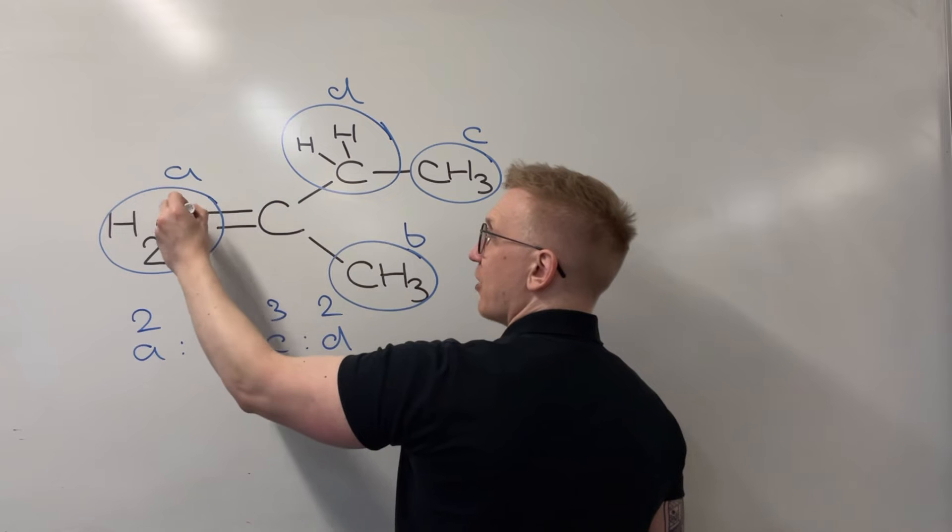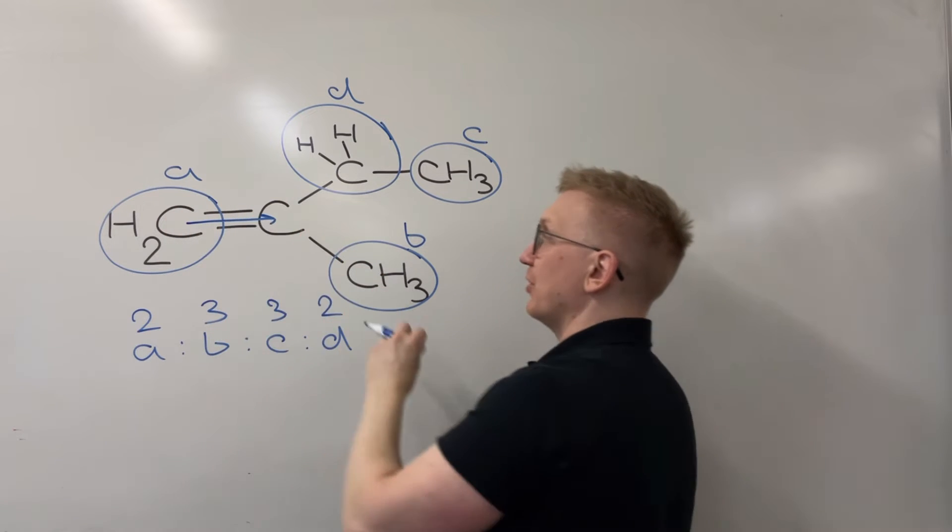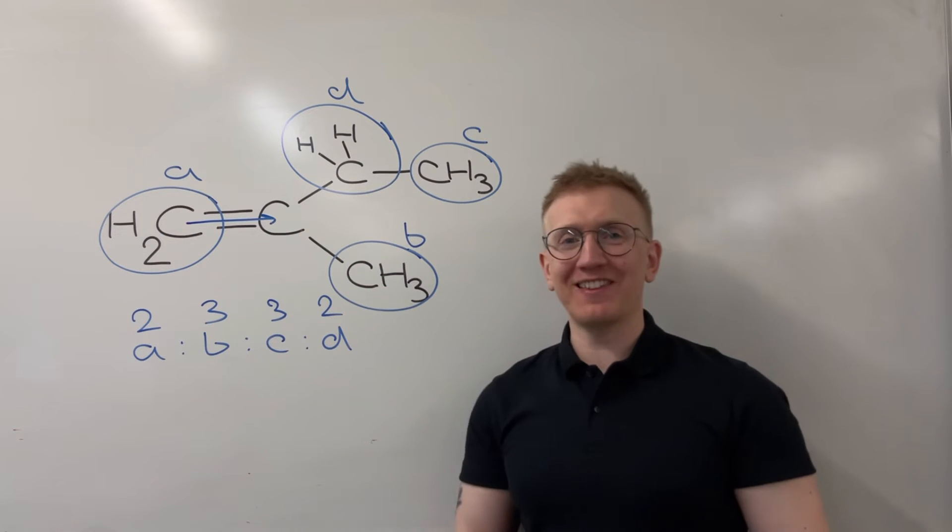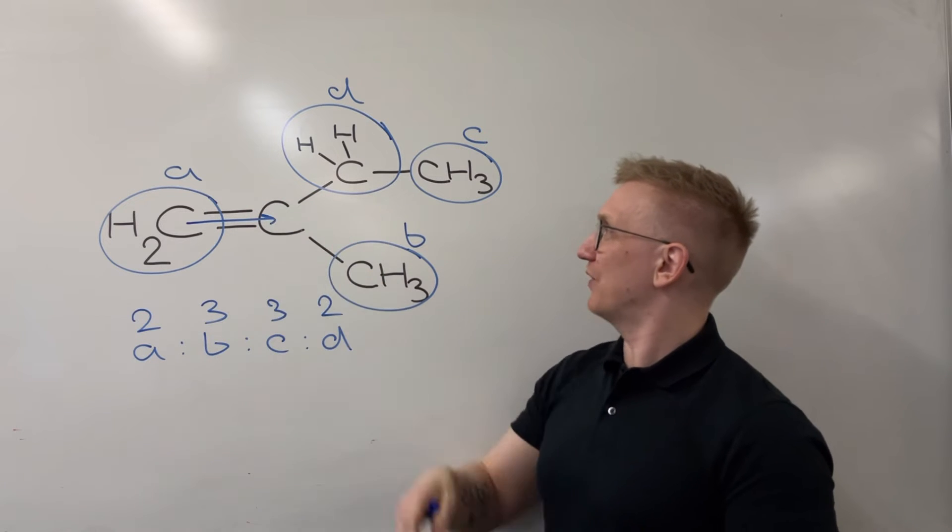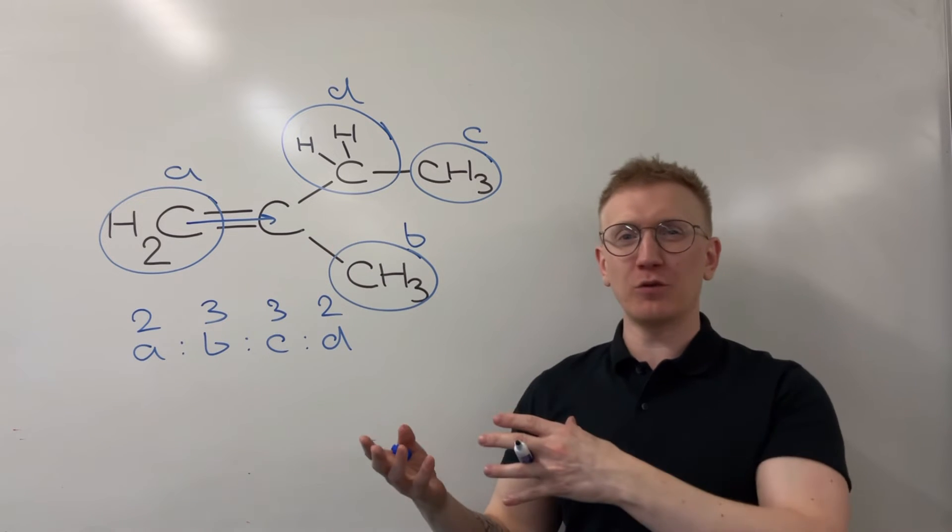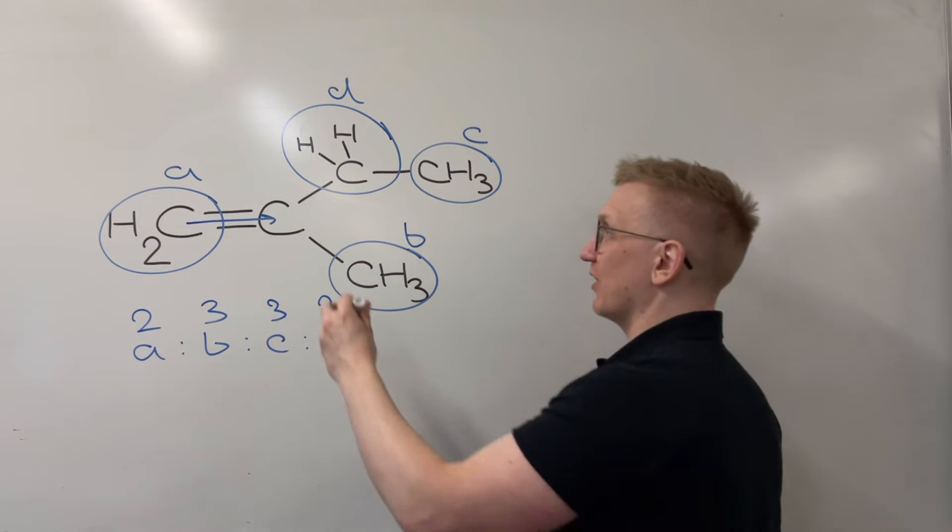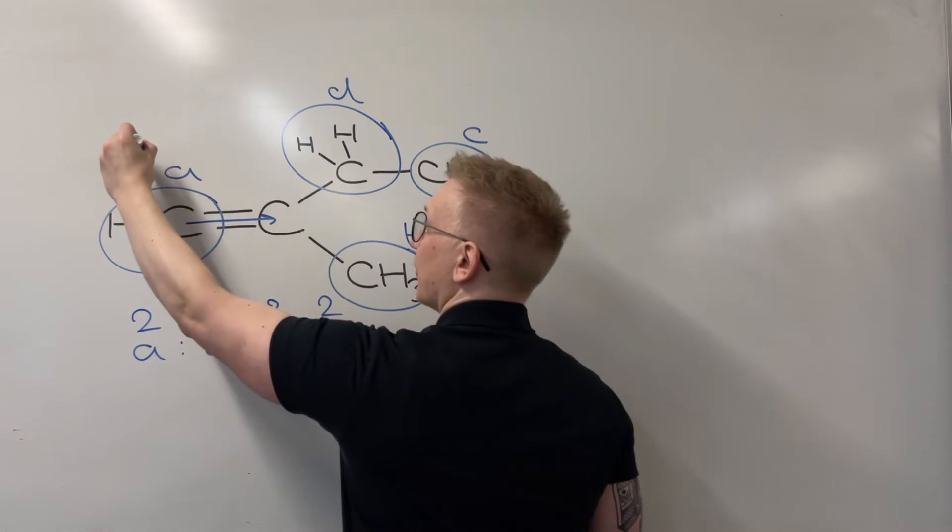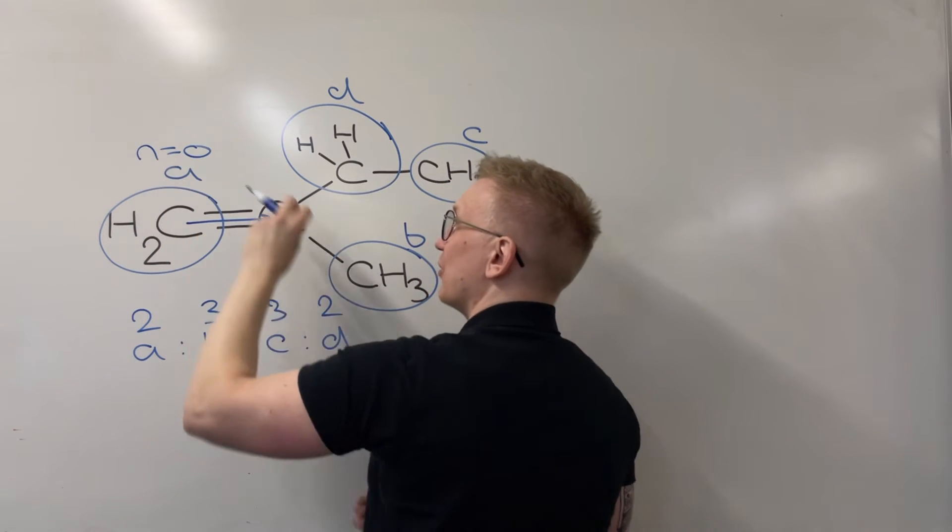So I'm going to go from this environment first and I go to the next carbon up. And well, there's nothing there, is there? There's no hydrogens directly on this carbon atom just here. It just leads to other carbons. So unfortunately here, our N value for environment A is going to be zero.